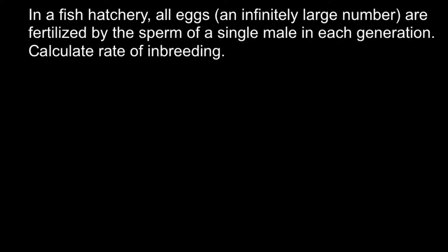Today's video is going to be very interesting. This video is about population genetics and how balances between sexes affect effective population size. Here is a problem: in a fish hatchery, all eggs — an indefinitely large number — are fertilized by the sperm of a single male in each generation. Calculate the rate of inbreeding.